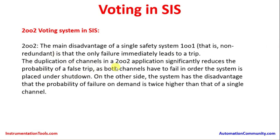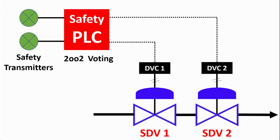In a 2 out of 2 application, the duplication of channels significantly reduces the probability of a spurious trip, as both channels must fail in order for the system to be placed under shutdown. On the other side, the system has the disadvantage that the probability of failure on demand is twice as high as that of a single channel. In the 2 out of 2 configuration, the process pipe feeds through two parallel valves in series — both must close for the process to shut down and trigger a safety trip.